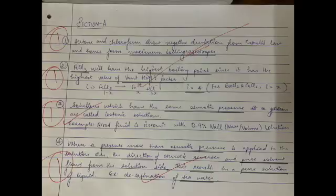Let's start with the basics — one-marker questions. All you're supposed to write is to the point. Here there's a question asking why FeCl₃ will have the highest boiling point, and the reason is simply that it has the highest value of van't Hoff factor. I just wrote that and underlined that particular point.